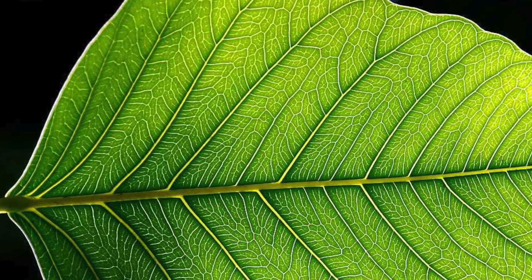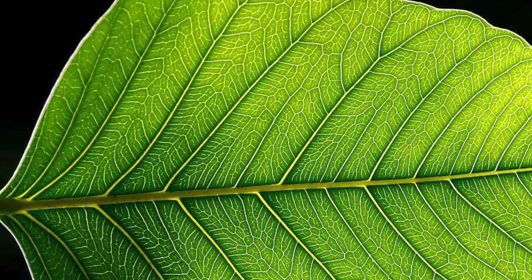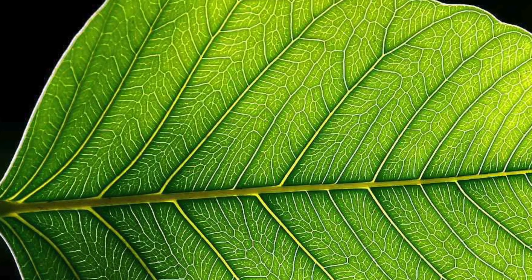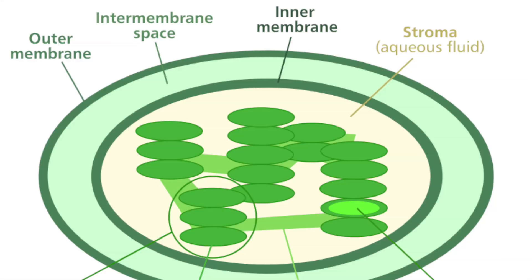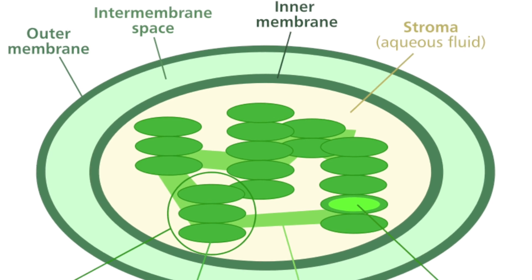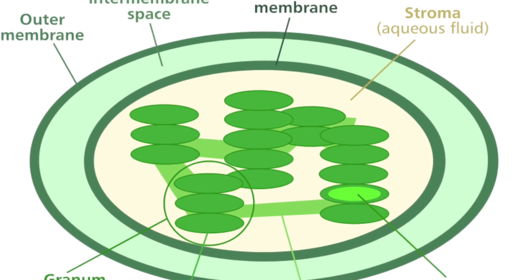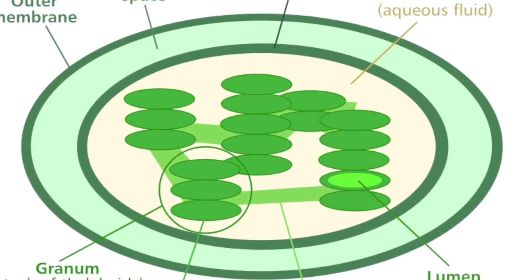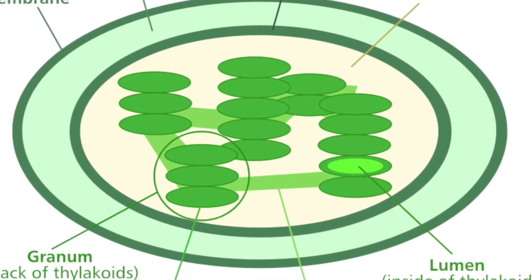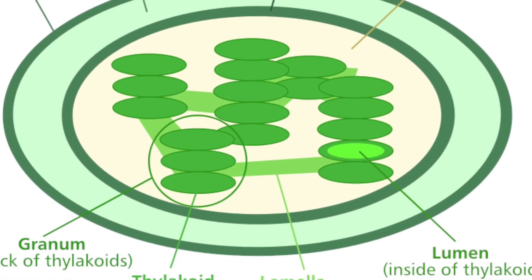For example, they contain specialized green structures called chloroplasts, and these chloroplasts contain chlorophyll that traps the light needed for photosynthesis.